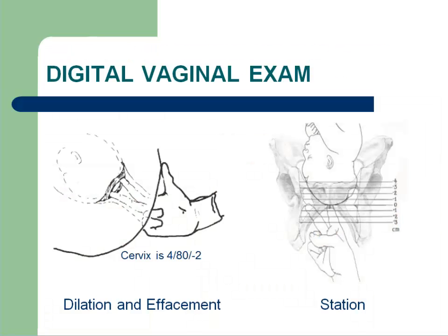Cervical dilation, effacement, and fetal station are evaluated by a digital vaginal examination. Remember that full cervical dilation is 10 cm in a term pregnancy. Effacement is the thinning of the cervix that ranges from a thickness of about 4 cm, which represents 0% effacement, to a paper-thin cervix that is considered to be 100% effaced.